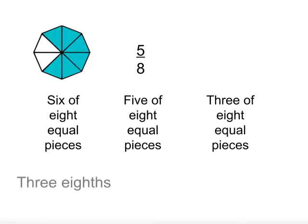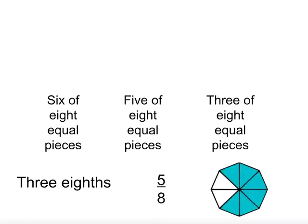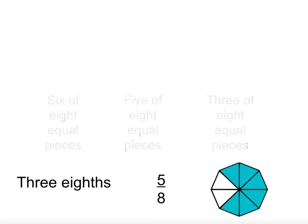So 3 eighths is the smallest, followed by 5 eighths, and then 6 eighths. When ordering or comparing fractions, it is easier if we know how to describe them in the same way.